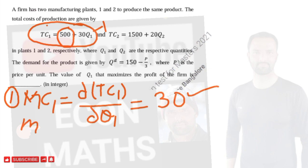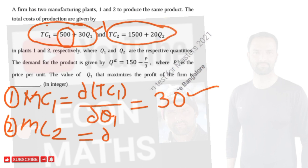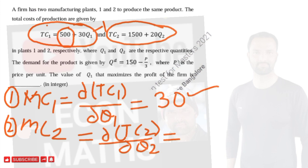For plant two, marginal cost is the derivative of the total cost function TC2 with respect to q2. The derivative of the constant 1500 is zero, and the derivative of q2 is one, so we are left with 20. So marginal cost in plant one is 30 and marginal cost in plant two is 20.